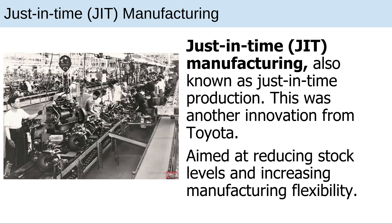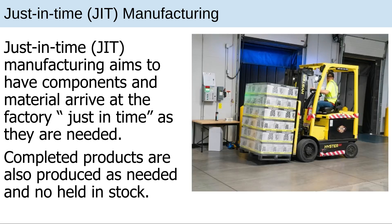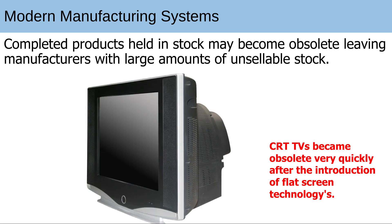Just-in-time manufacturing, JIT, also known as just-in-time production, is another innovation from Toyota, aimed at reducing stock levels and increasing manufacturing flexibility. Just-in-time manufacturing aims to have components and materials arrive at the factory just in time as they are needed. Completed products are also produced as needed and not held in stock, as products held in stock may become obsolete — for example, CRT TVs became obsolete very quickly after the introduction of flat-screen TVs.